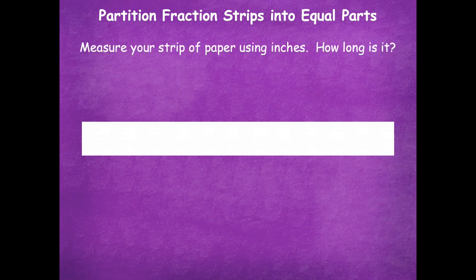Measure your strip of paper using inches — how long is it? Grab that ruler, put it on top, make sure you're using the inches side, not your centimeter side. How long is it? It's 12 inches. Both strips of paper that you're going to need should be 12 inches.